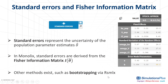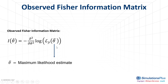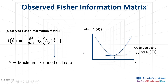Let me first explain what the observed Fisher information matrix is. The Fisher information matrix is defined as minus the second derivative, with respect to the population parameters theta, of the log likelihood. It is a function of theta. Monolix actually calculates the observed Fisher information matrix, which is evaluated at the maximum likelihood estimate, called theta hat.